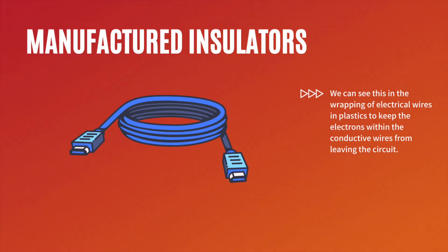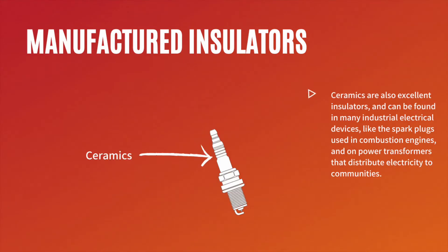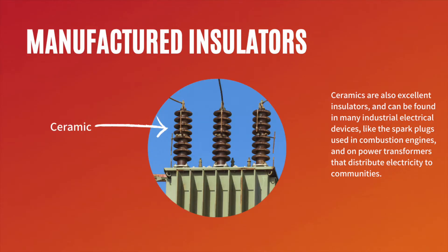We can see this in the wrapping of electrical wires in plastics to keep electrons within the conductive wires from leaving the circuit. Ceramics are also excellent insulators, and can be found in many industrial electrical devices, like spark plugs used in combustion engines and on power transformers that distribute electricity to communities.